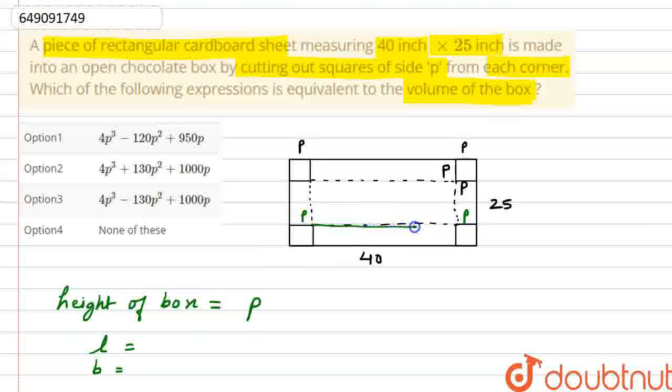How much length will be this distance? This will be 40 minus P minus P. That is 40 minus 2P. So, our length is 40 minus 2P. And similarly, breadth is 25. So, 25 minus P minus P. Breadth is 25 minus 2P.